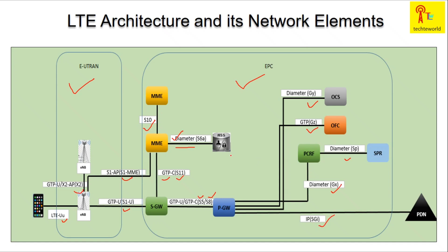Now let's talk about the functionalities of each node, starting with the eNodeB. The eNodeB handles radio resource management, routing of user plane packets toward the SGW, MME selection, and scheduling of messages and transmissions. Radio resource management includes radio bearer control, which is responsible for the setup, maintenance, and release of radio bearers based on services.